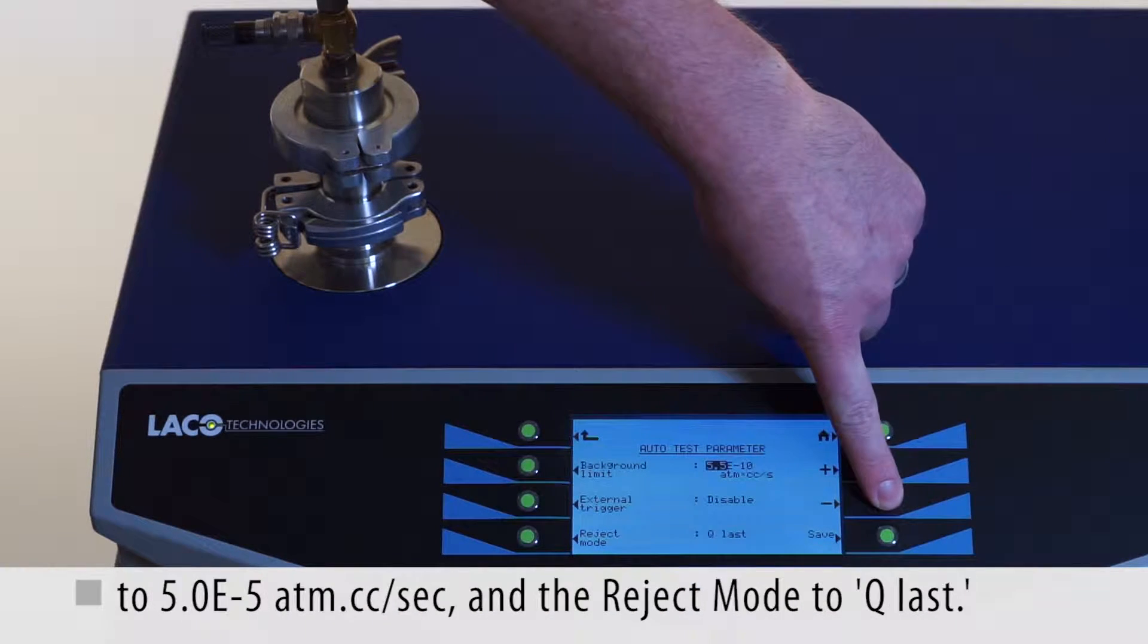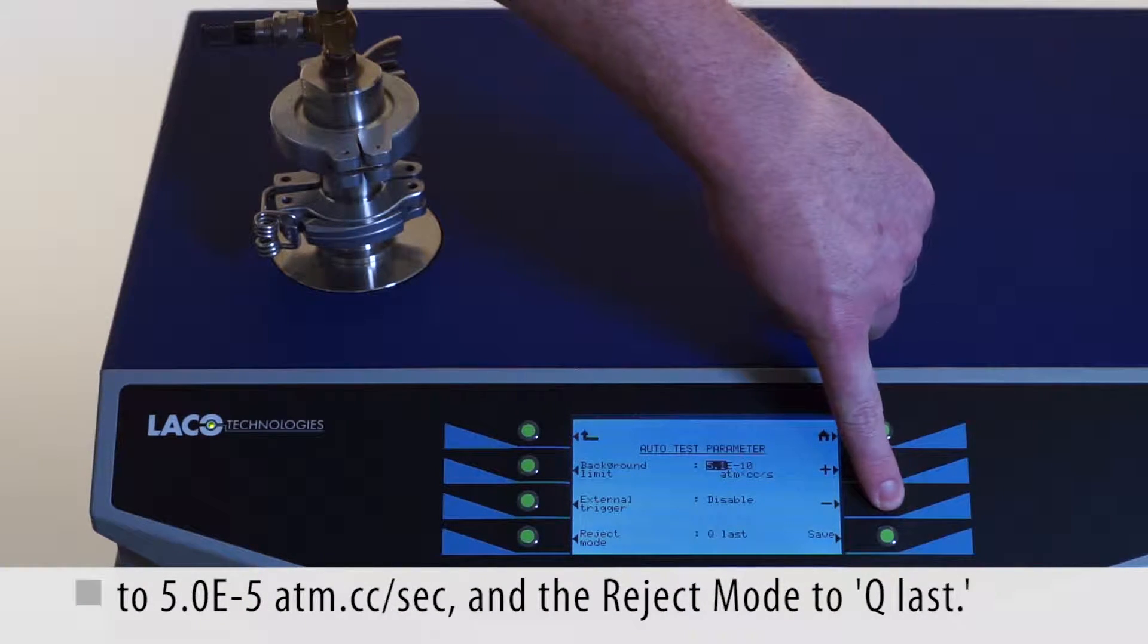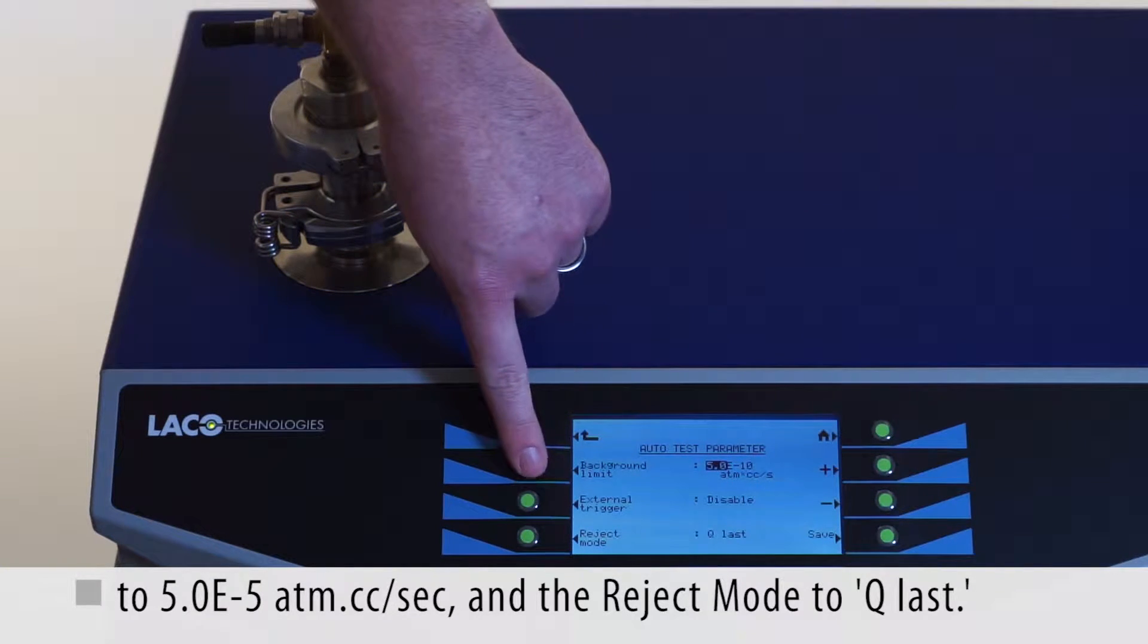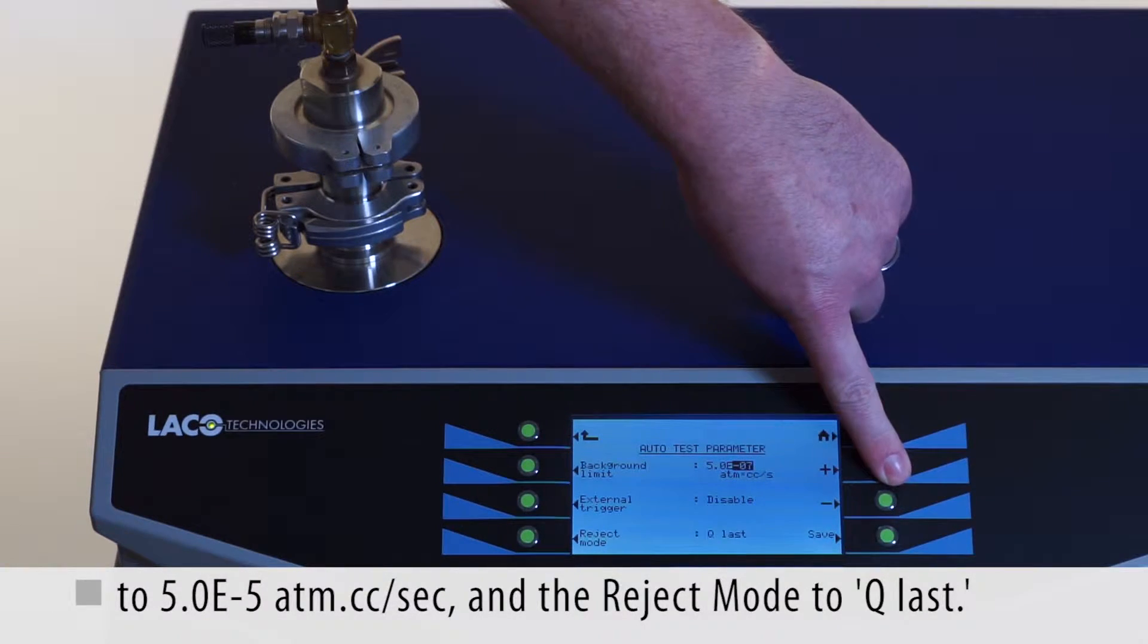For this demonstration, we will set the background to 5 to the negative 5 atmosphere cubic centimeters per second, and the reject mode to Q last.